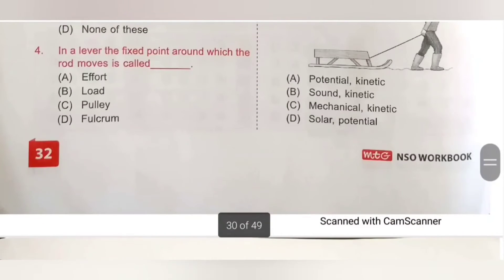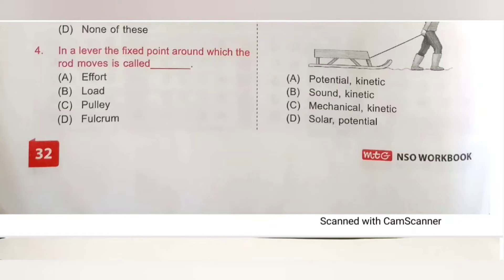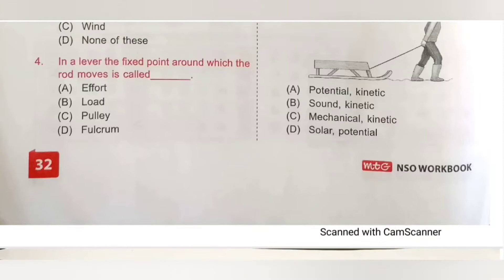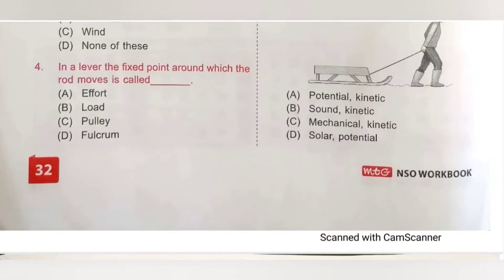Question 4: In a lever, the fixed point around which the rod moves is called dash. Option A: Effort, B: Load, C: Pulley, D: Fulcrum. In a lever, the fixed point around which the rod moves is called fulcrum. Option D is the correct answer.